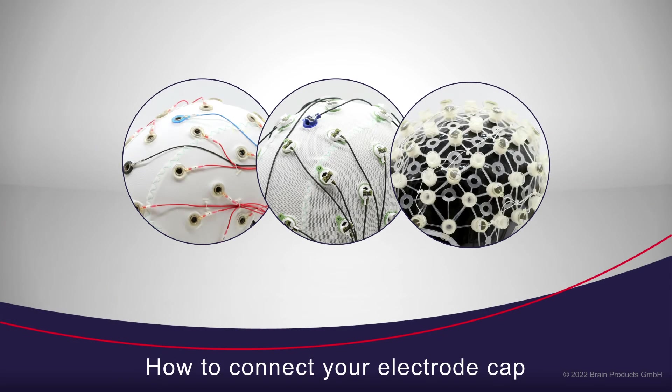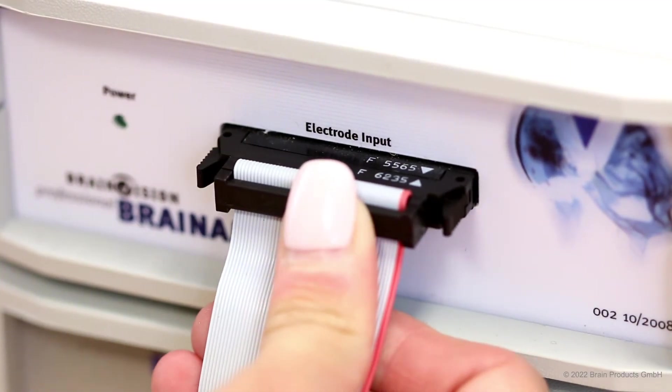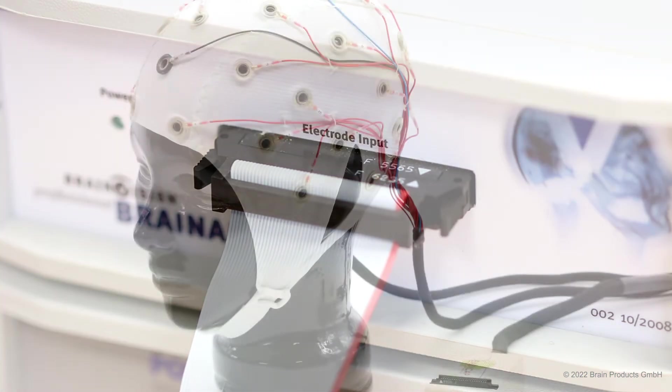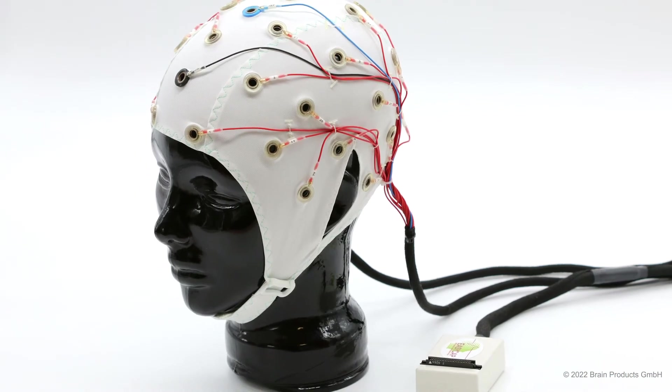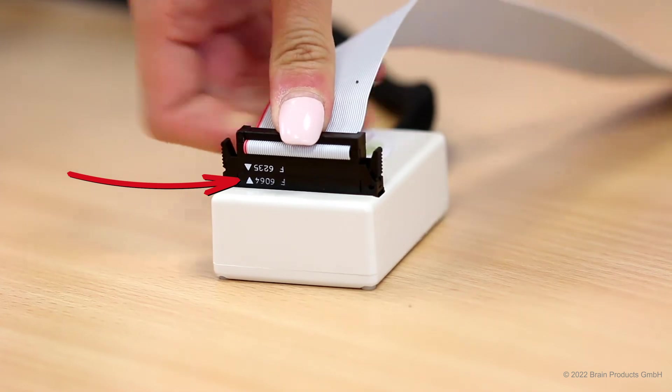To connect a cap, always use one of the supplied BAK cables and connect one end to the amplifier. Make sure that you connect the cable in a way so that the white arrows match. If you are using a brain cap, you can connect the other end of the BAK cable directly to the cap connector box.